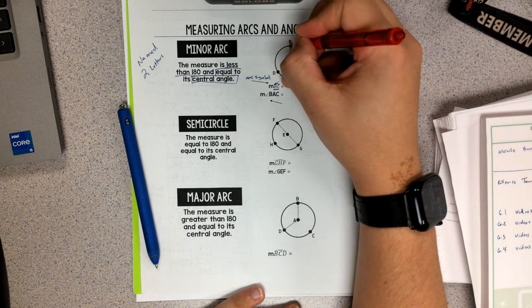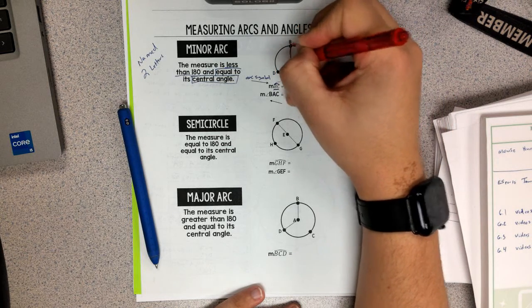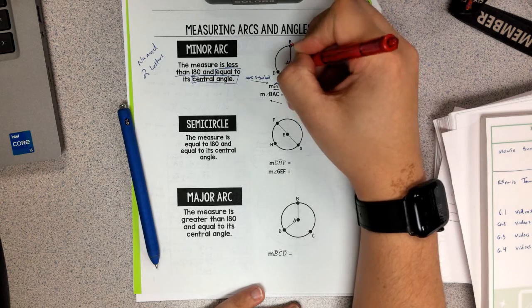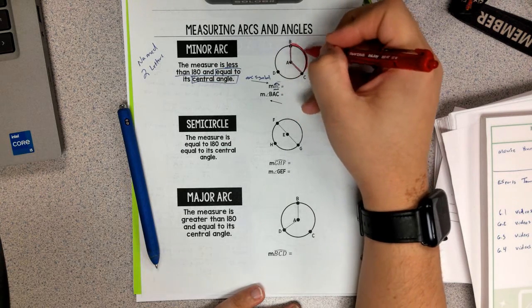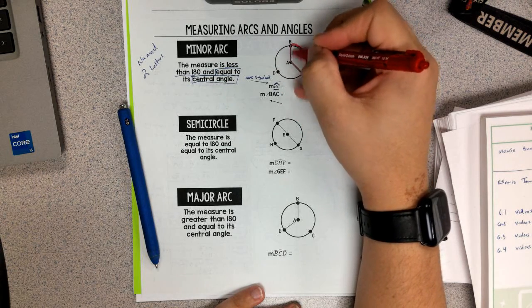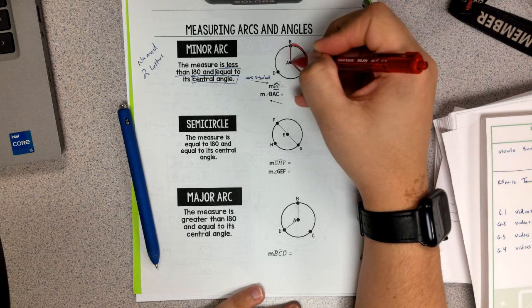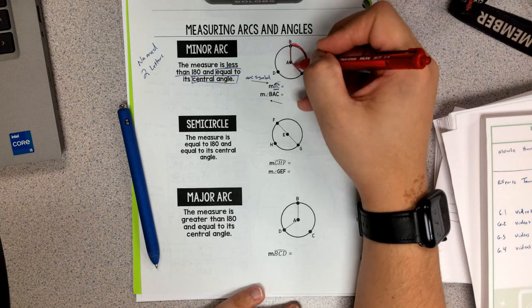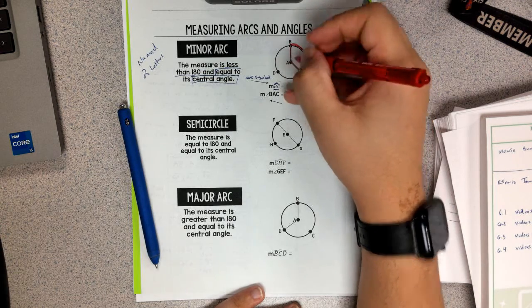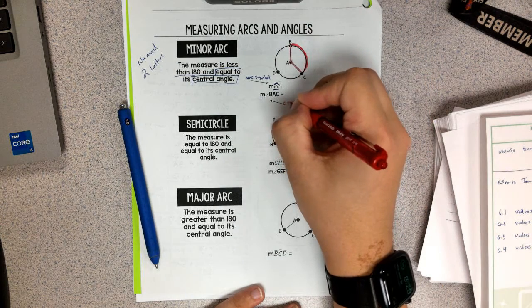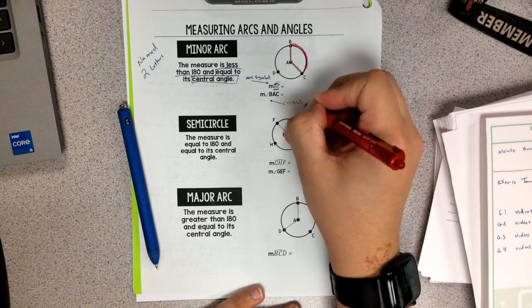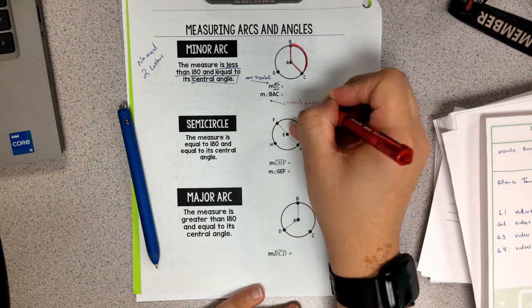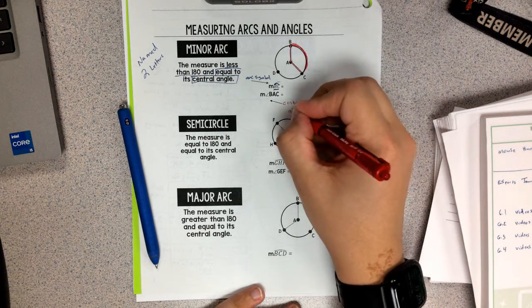Now, the central angle is the angle that makes up the minor arc. So here we had BC, the curve. So we connect going through the center point. Our center is always going to be where our angle is for our central angle. So central angle happens at the center point.